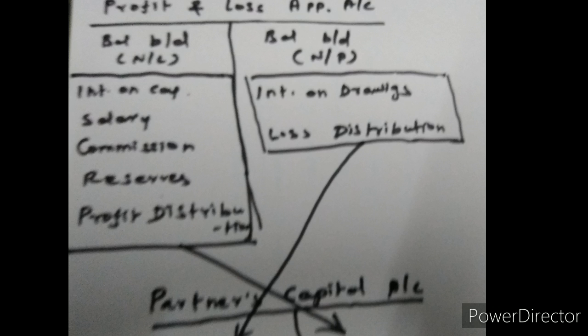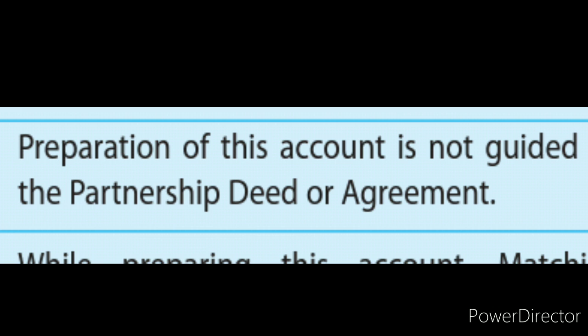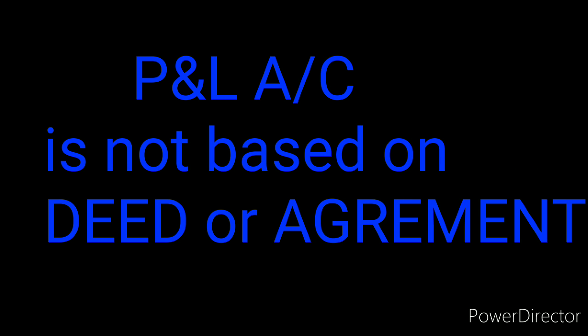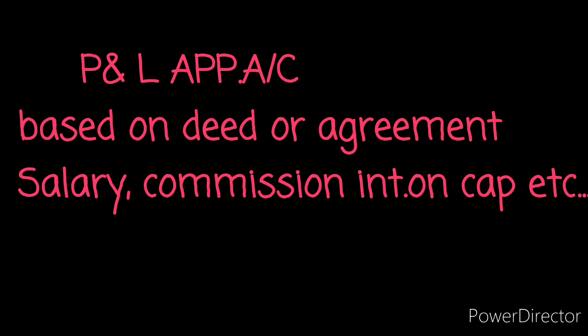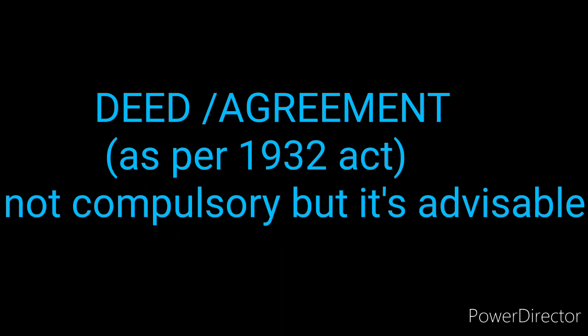Fourth difference — partnership deed or agreement. The Profit and Loss Account is not guided by the partnership deed or agreement, so no items are determined by the deed here. The Profit and Loss Appropriation Account, however, is guided by the partnership deed and agreement. Salary, commission, interest on capital, interest on drawings, and reserves — all these items are governed as per the Partnership Act 1932 deed or agreement.